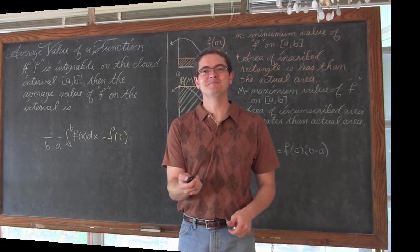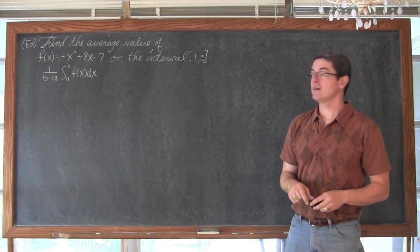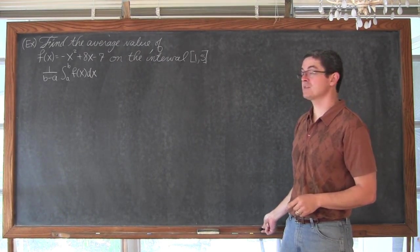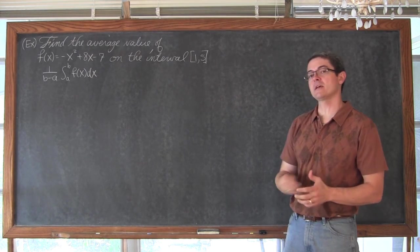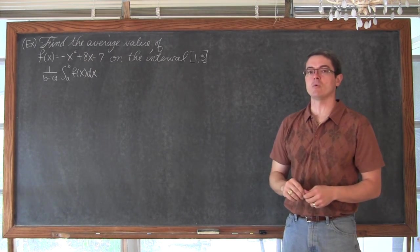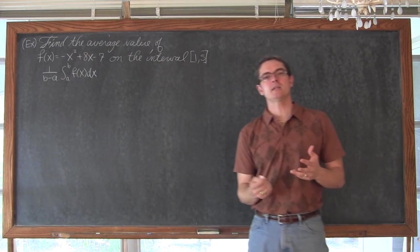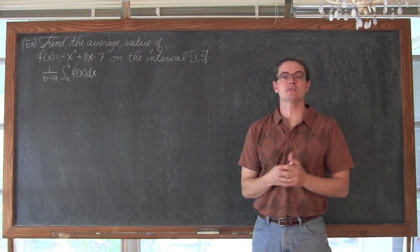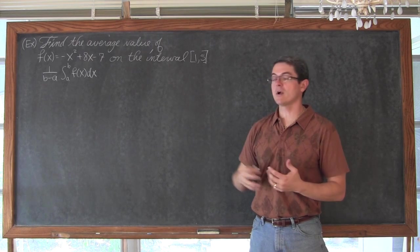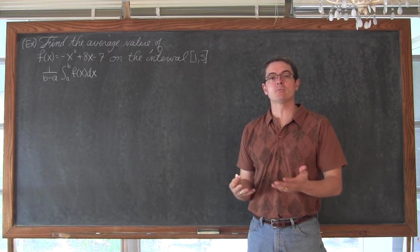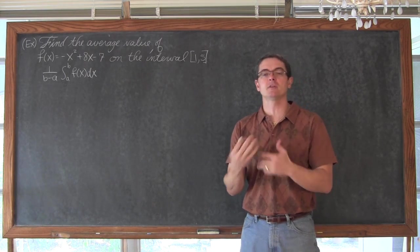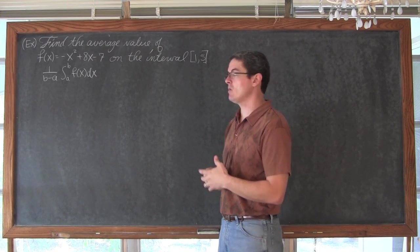Find the average value of f equals negative x squared plus 8x minus 7 on the closed interval of 1 to 5. So whenever you are learning a brand new concept, it is a good idea, especially when it has a formula attached to it that you need to memorize, write that down as you do the problem and then fill in the spots, fill in the blanks, and then continue on with your problem.